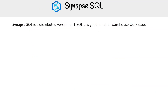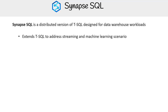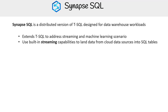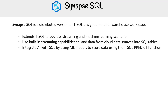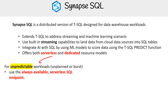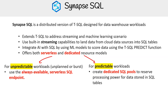Let's talk a bit about Synapse SQL, a vital component of this platform. Synapse SQL is a distributed version of TSQL designed for data warehouse workloads. It extends TSQL to address streaming and machine learning scenarios. You can use built-in streaming capabilities to land data from cloud data sources into SQL tables. It integrates AI with SQL by using ML models to score data using the TSQL PREDICT function. It offers both serverless and dedicated resource models. For unpredictable workloads that are unplanned or bursty, you can use the always available serverless SQL endpoint. For predictable workloads, create dedicated SQL pools to reserve processing power for data stored in SQL tables.